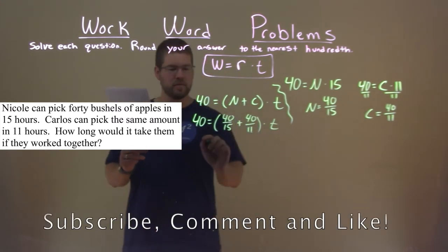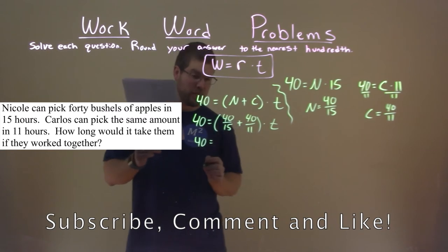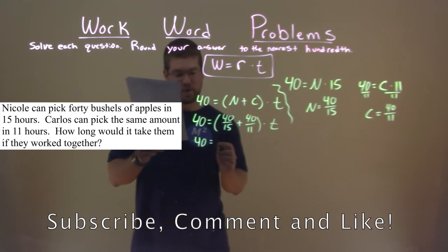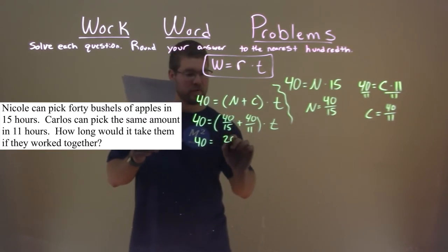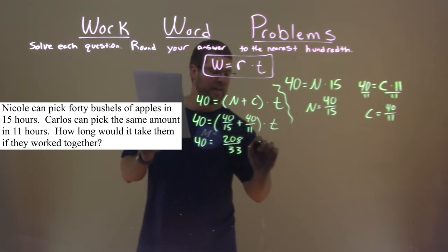We add these two together, and 40 equals 40 over 15 plus 40 over 11, which comes out to be 208 over 33, and we're multiplying that by time.